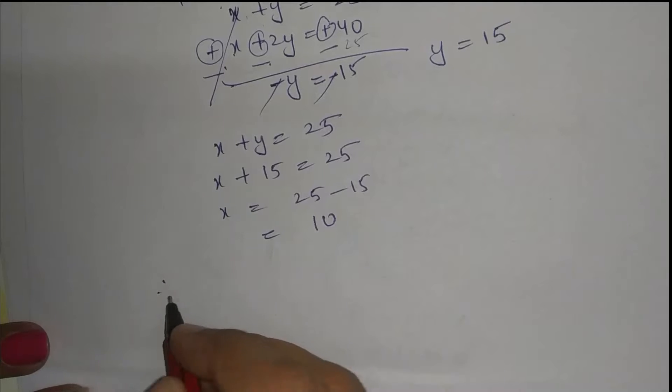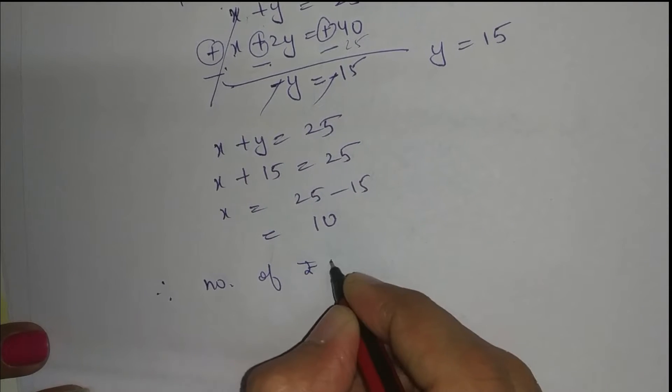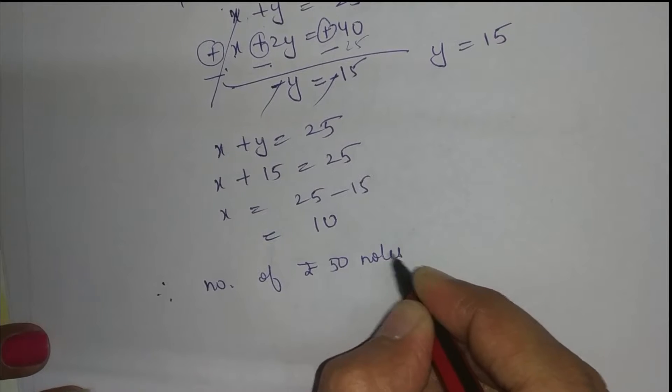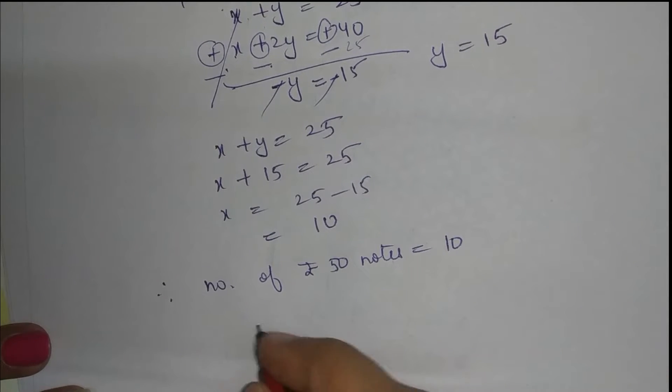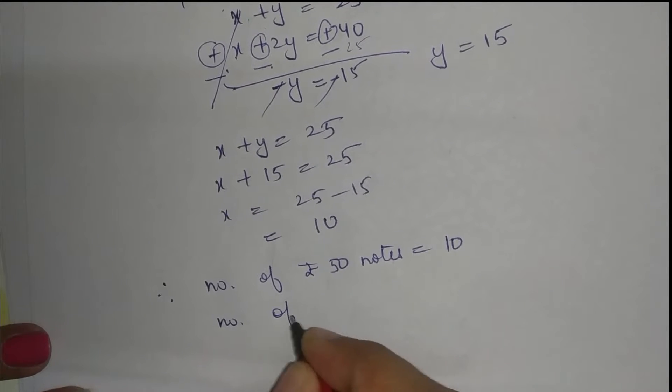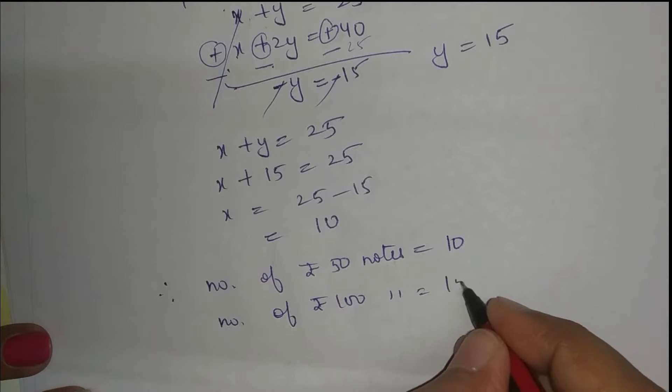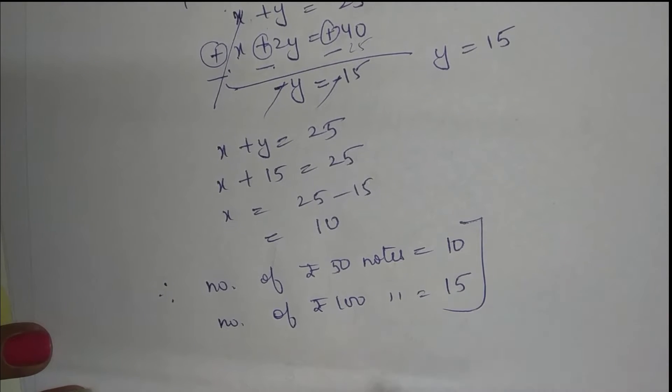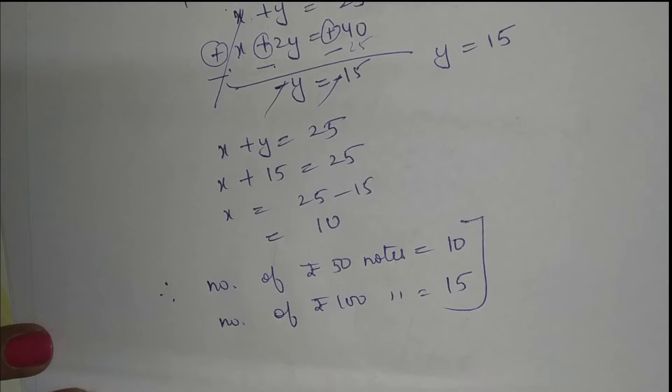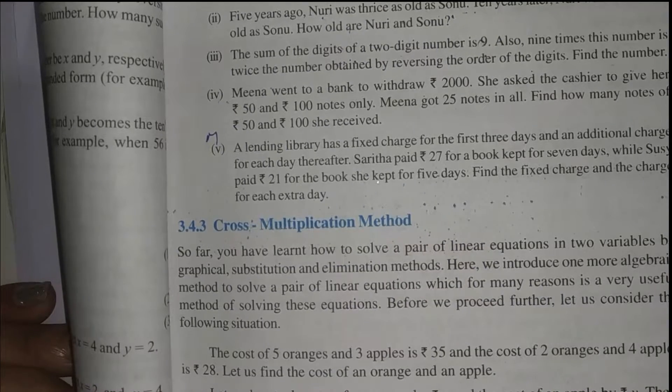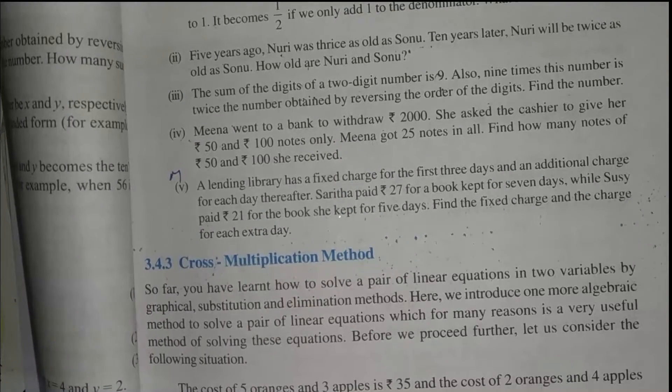Therefore, number of rupee 50 notes, 50 wale usko kitne mil gayi? 10 mil gayi. Aur number of rupee 100 notes, 100 wale usko y hai 15. To usko 15 notes mil gayi. To ye aagaya hamare paas answer. Let's read fifth part statement.